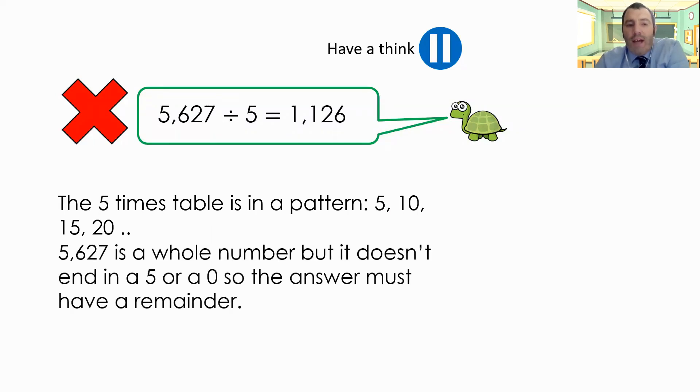So whilst it is a whole number, 5627 is a whole number. As I said, it doesn't end in a five or a zero. So our answer must have a remainder to it. So the correct answer is 5627 divided by five is 1125 with a remainder of two.